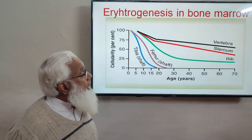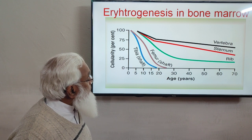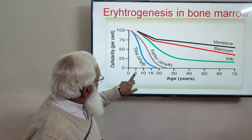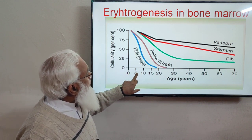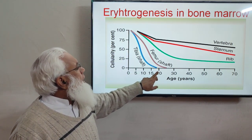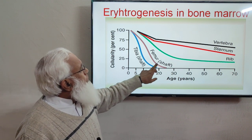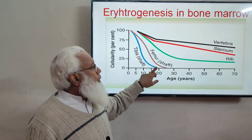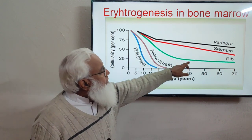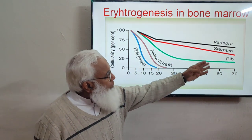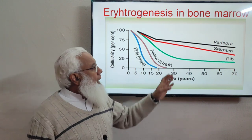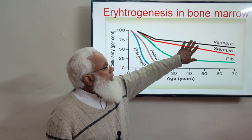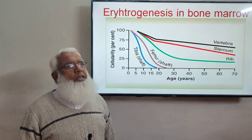This diagram shows RBC production in the bone marrow. In early life, RBCs are produced in the shafts of the tibia and femur, but by around age 15–20, those shafts are filled with yellow bone marrow and production stops there. The vertebrae, sternum, and ribs continue producing RBCs throughout life — up to age 70 and beyond — because red bone marrow persists in those sites.